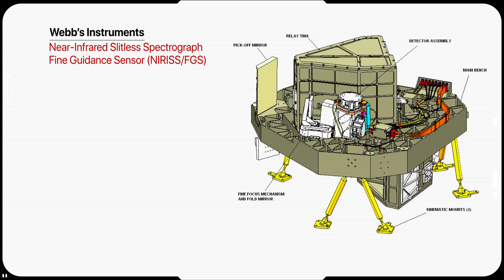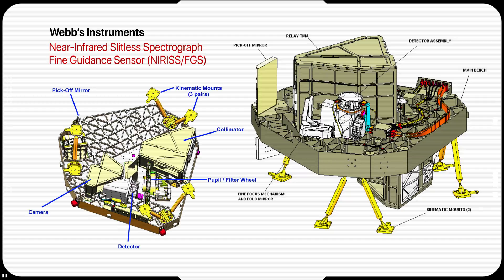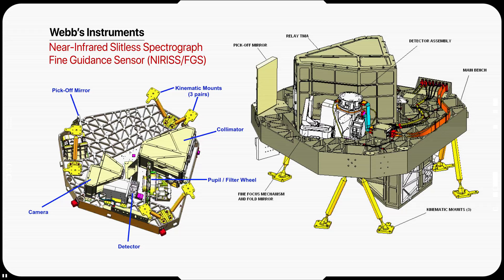Housed in the same assembly as NIRISS is Webb's Fine Guidance Sensor. The FGS is a camera system designed to make sure Webb is stable and pointing in exactly the right direction throughout the observation. The FGS detects and identifies guide stars and ensures that Webb is locked onto those stars for the entire observation.